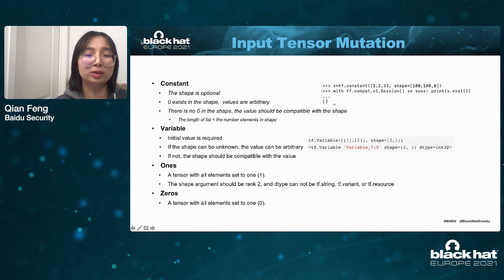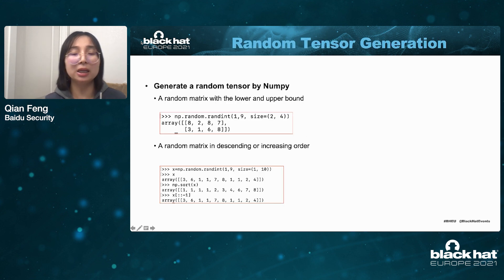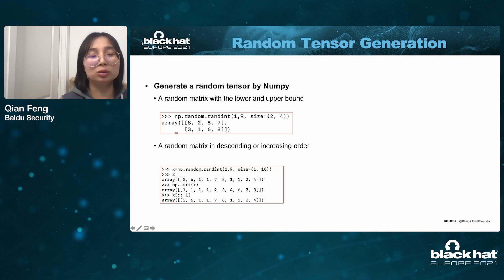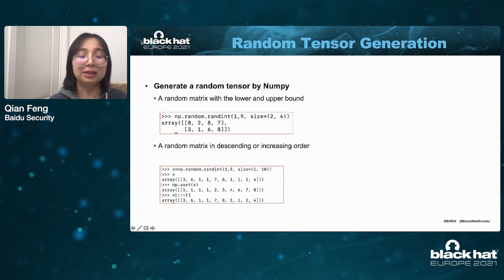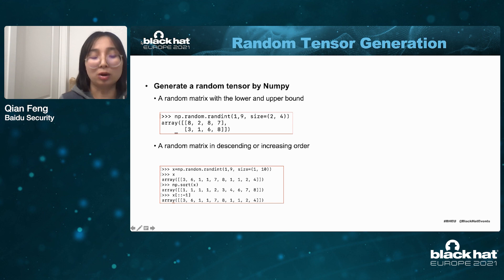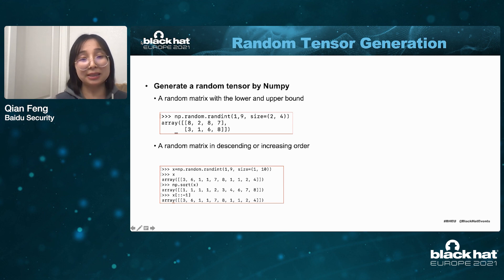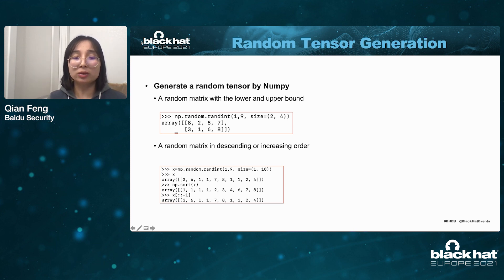So we pursue an easier way. Our solution is to generate random tensors using NumPy. NumPy provides many manipulation APIs on matrices — we can easily generate a matrix with lower and upper bounds using random int, as long as we provide the lower and upper bound and the size (which is the shape). We can also generate a random tensor in order using NumPy, generating as many random tensors as we want without worrying about value, shape, and data type compatibility.